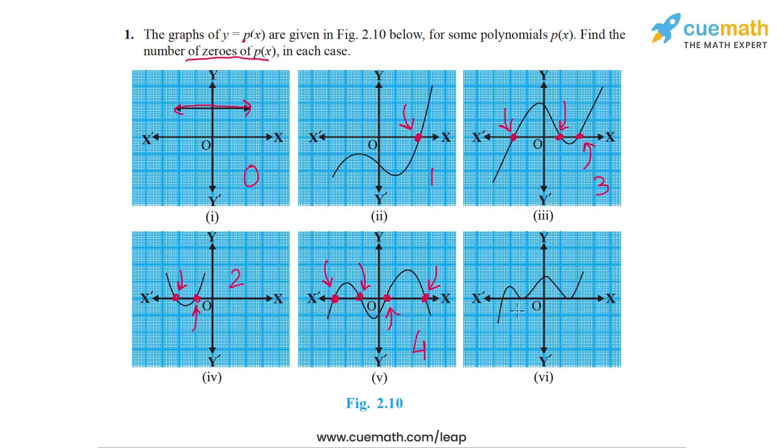And finally, in the last part, the graph crosses the x-axis here, it touches the x-axis here. So this is also a zero, because at this point also the value of the polynomial becomes 0. And then it touches the x-axis again at this point. So here also the value of the polynomial becomes 0. So this graph has a total of three zeros.